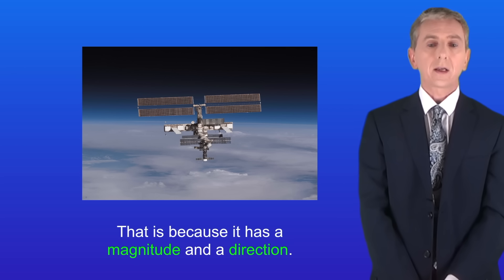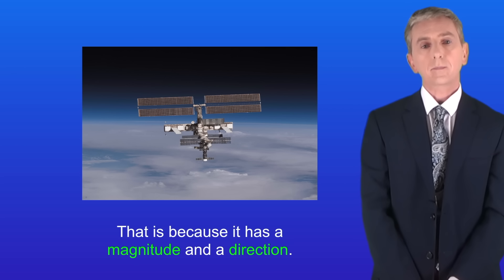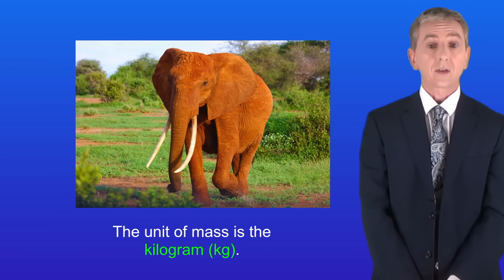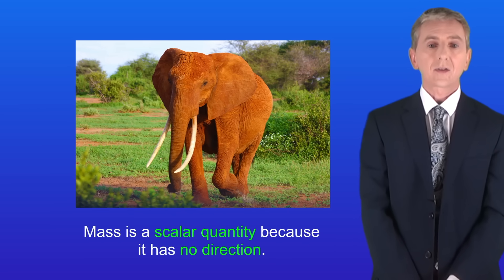So we're going to start by looking at the idea of mass. The mass of an object tells us how much matter the object has in it and the unit of mass is the kilogram. Mass is a scalar quantity because it's got no direction.